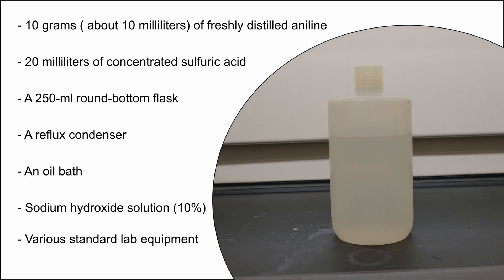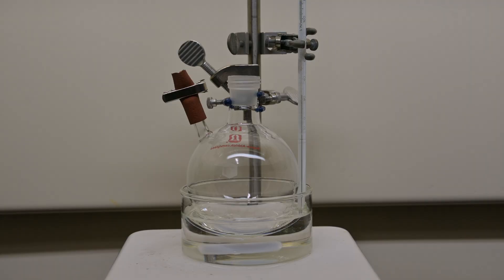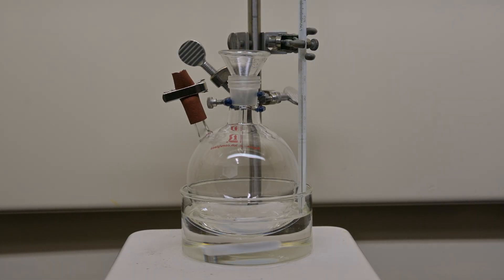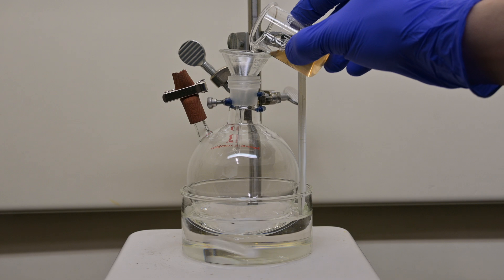You'll also need a sodium hydroxide solution, about 10%. First pour 10 grams of freshly distilled aniline into our 250 milliliter round bottom flask with a stir bar.